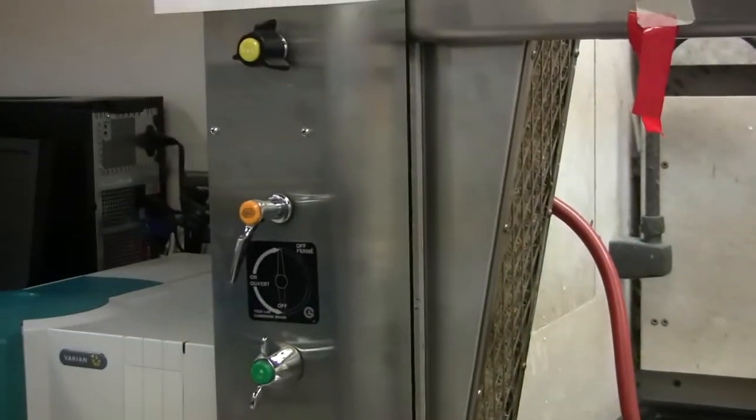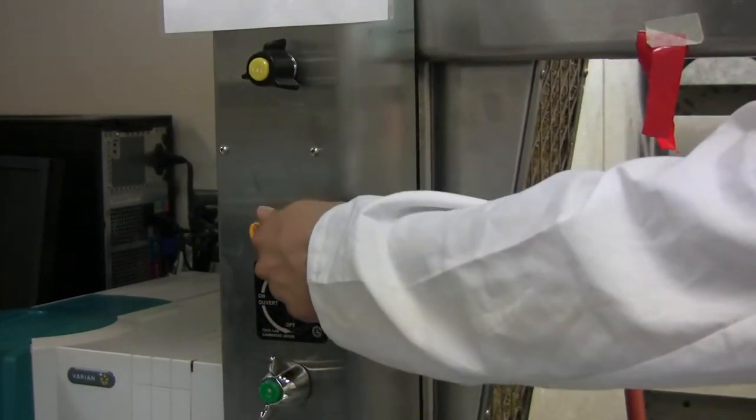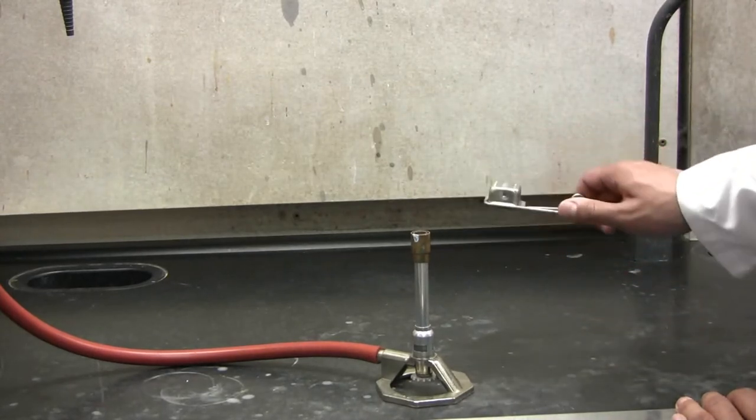Next, turn on the gas on the outside of the fume hood. You are now ready to light the Bunsen burner with the striker.